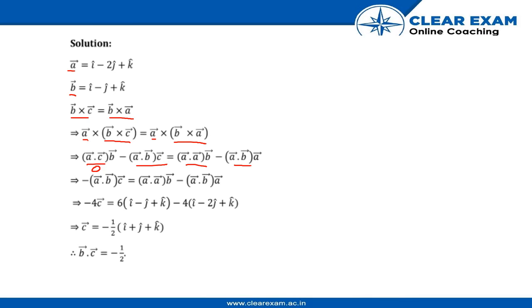Now we find a dot b. The dot product is straightforward: i dot i gives 1, minus 2j dot minus j gives plus 2, and k dot k gives 1. The total is 1 plus 2 plus 1, which equals 4.